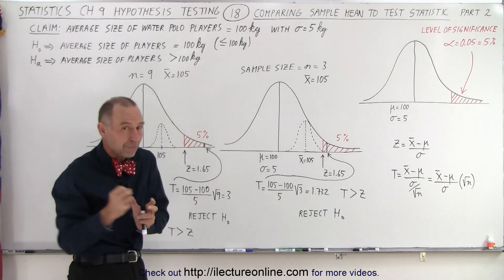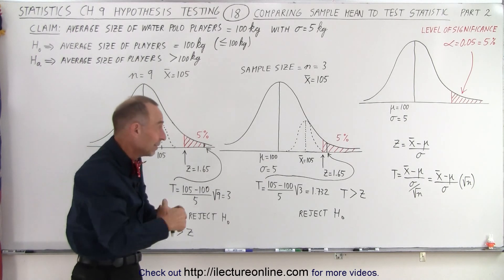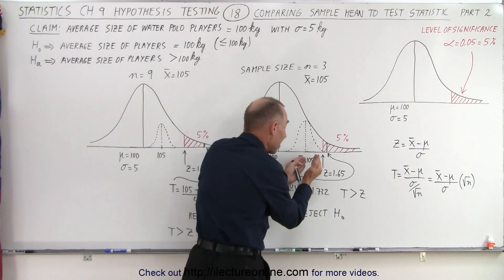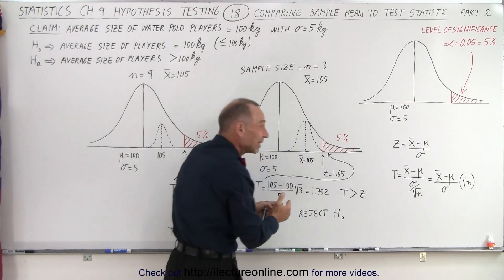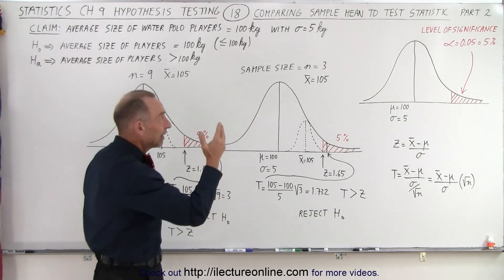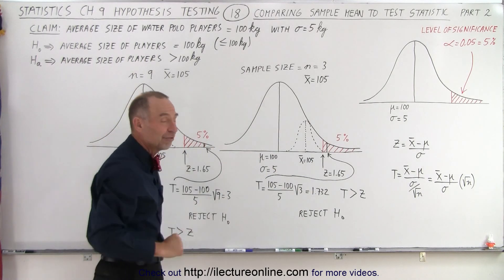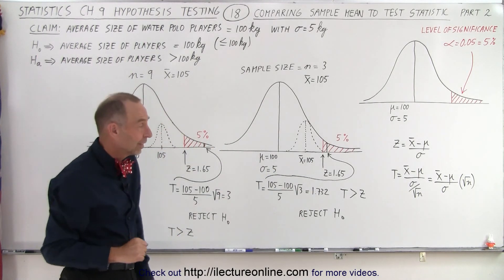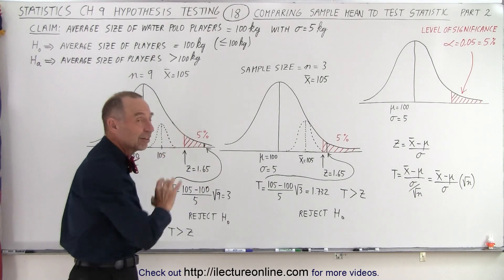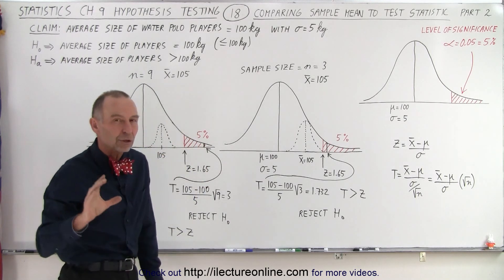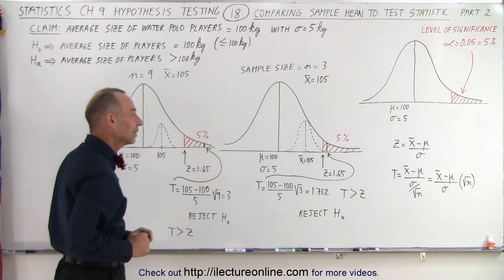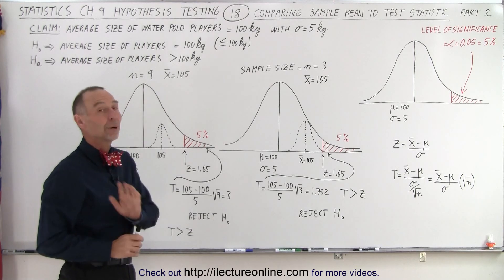If we pick three players at random and their average size is 105, that's enough confidence at a significance level of 5% that we believe the average size of players is actually greater than 100 kilograms, and that's how we did that.